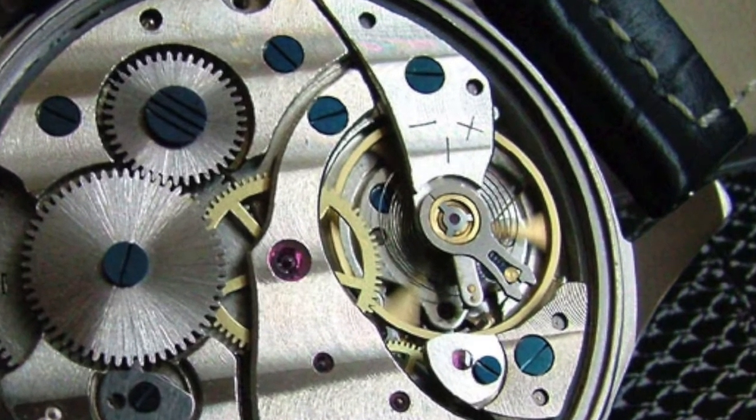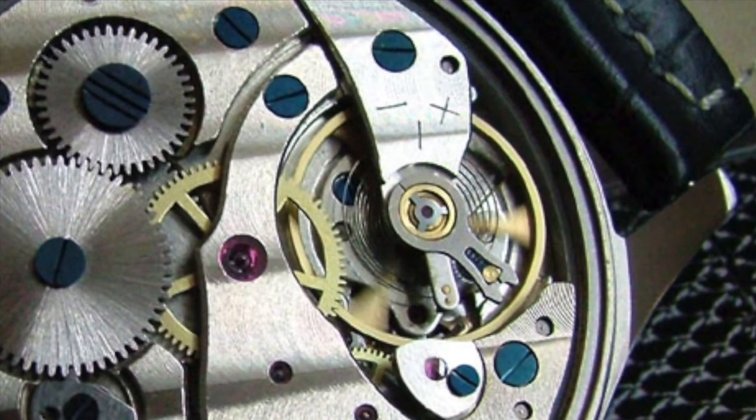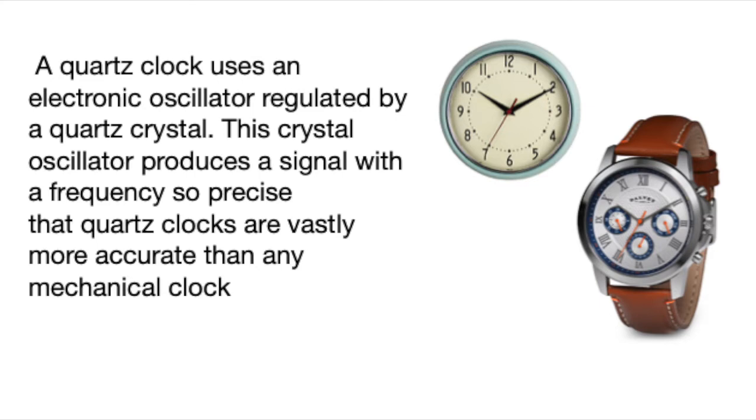Highly accurate quartz clocks, which were invented nearly a hundred years ago, have only become commonplace in the last 50. This uses an electronic oscillator. The crystal oscillator produces a signal with a frequency so precise that quartz clocks are vastly more accurate than any mechanical clock.